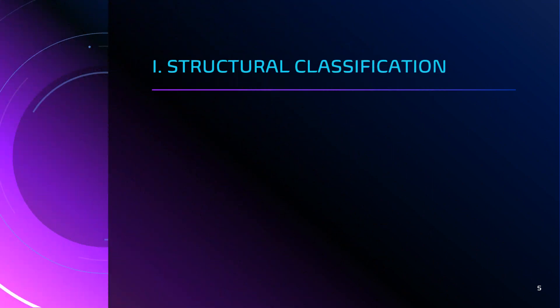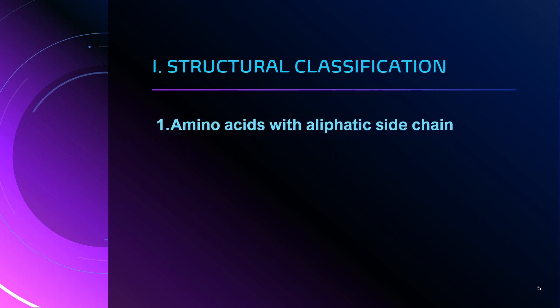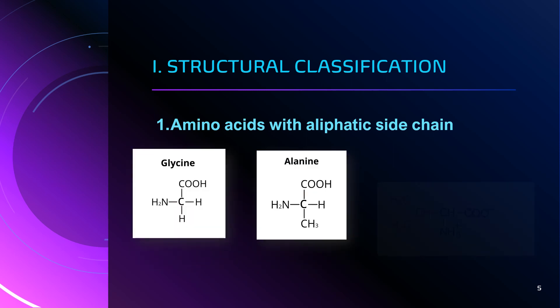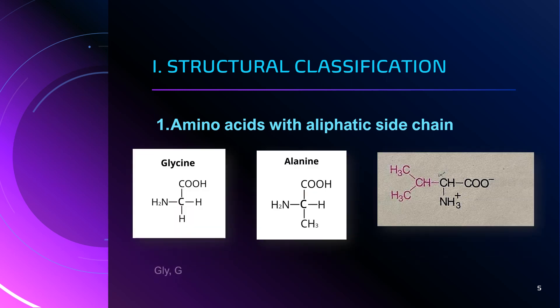Let us understand the classification of amino acids in detail. First, structural classification. Based on the structure of amino acids, standard amino acids are classified into seven categories. The first one is amino acids with aliphatic side chain, and this category includes glycine, alanine, and valine.